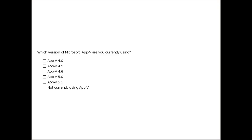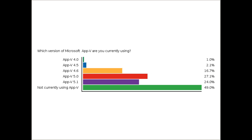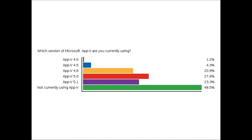Before we get into the meat, there is a poll question. We have quite a few people dialed in. We'd like to get an idea of where you are with AppV. The poll question on your screen is: which version of Microsoft AppV are you currently using? You can select the option on screen or enter your answer in the chat window in the lower left-hand corner. Lots of answers are coming in — let's skip to the results.